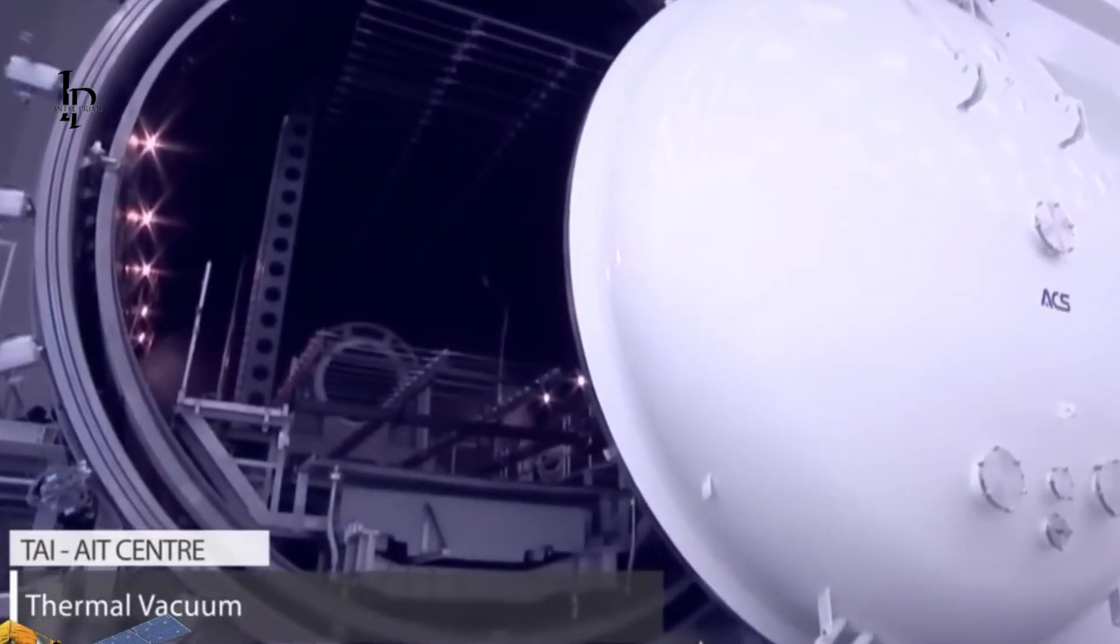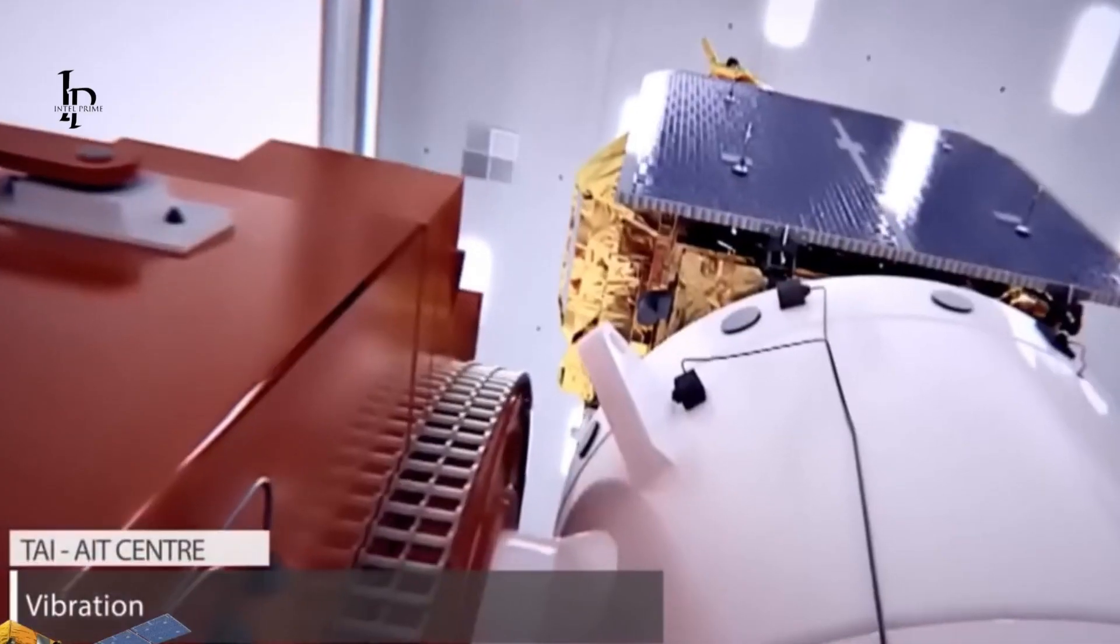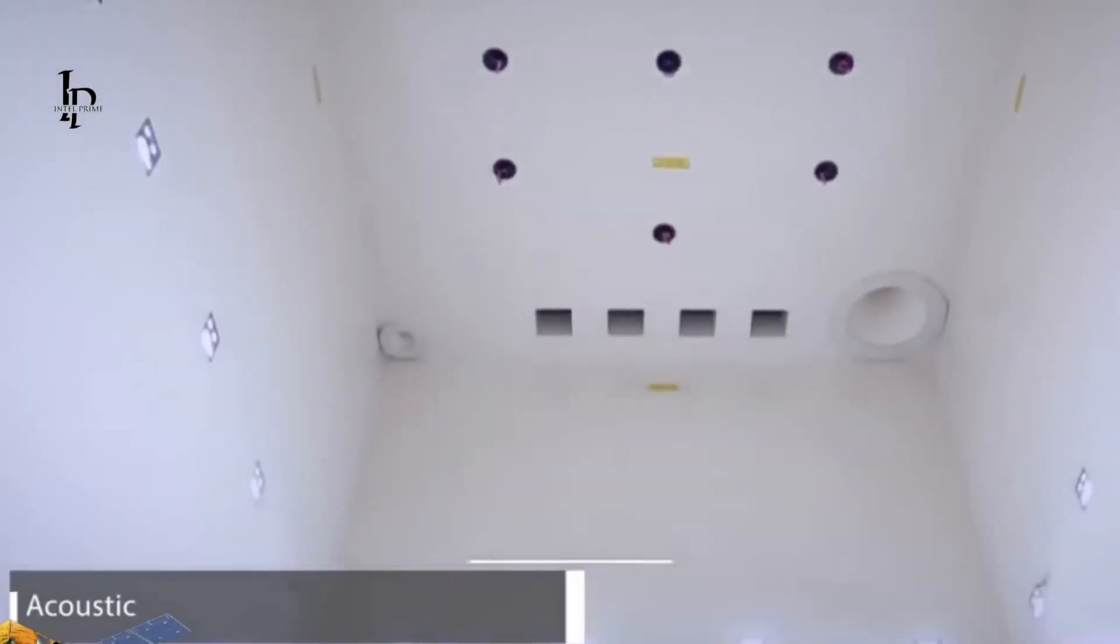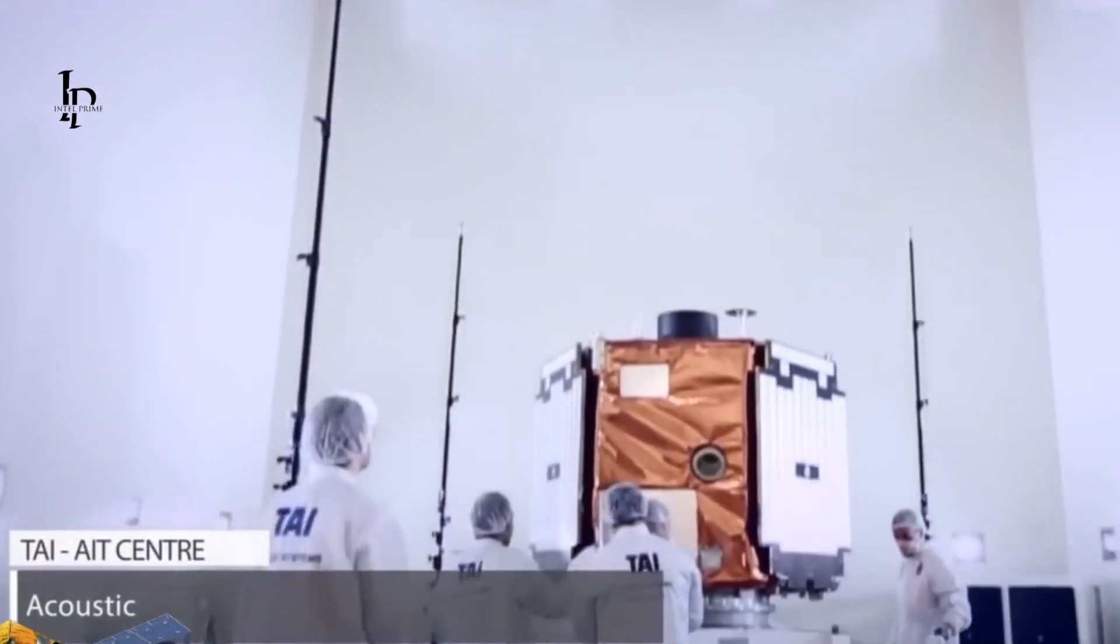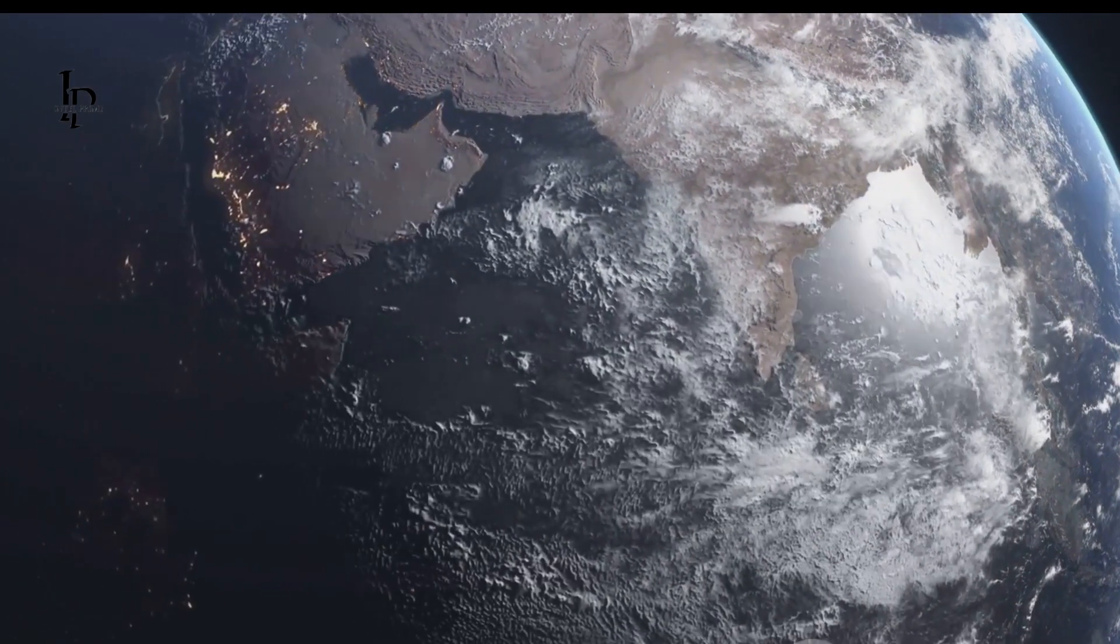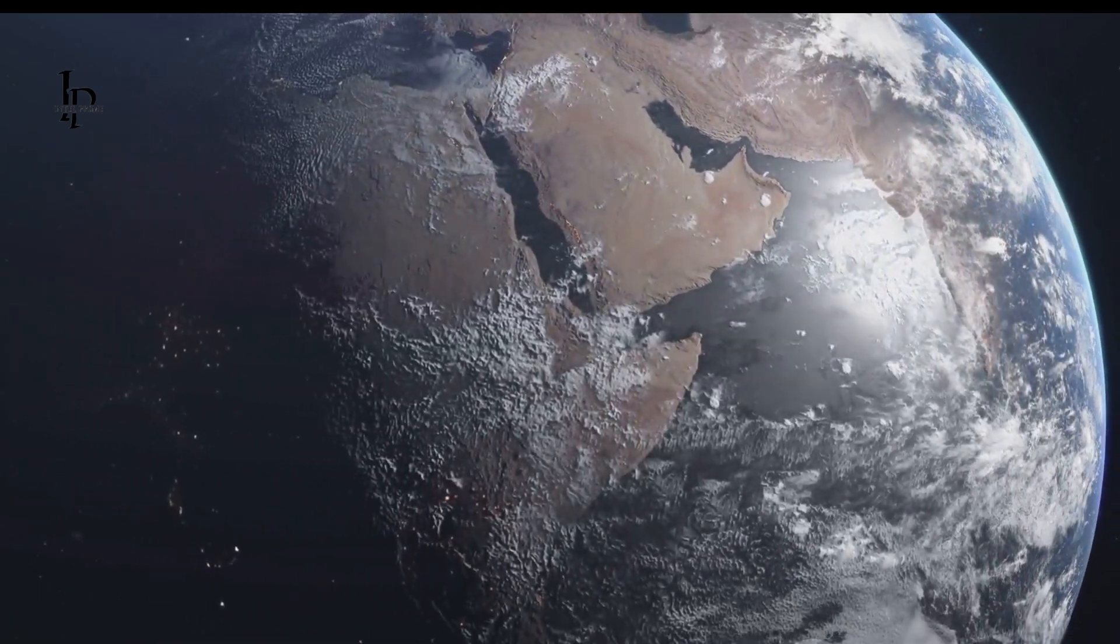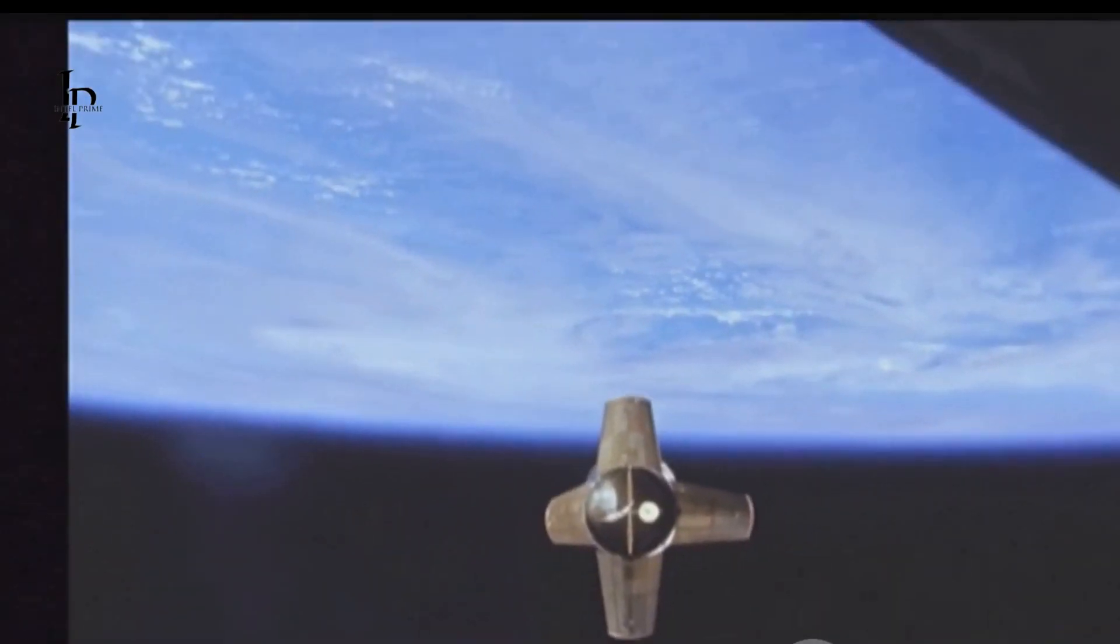This is where the assembly, integration and testing phases of the satellite took place. Boasting a power of 7.5 kilowatts, TurkSat-6A is set to occupy a geocentric orbit at a distance of 22,236 miles from the Earth.